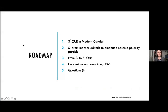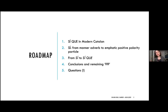The roadmap for today is the following: we will first look at how SICA works in modern Catalan, then we will focus on C, the first element of this cluster, and look at how we get it from Latin and how it evolves to old Catalan. Then we will look at how this old Catalan C changes and undergoes certain transformations to get to the current modern Catalan SICA. In the end, I will draw some conclusions from the data and the analysis I will have presented, and I will point at some questions that remain to be answered.